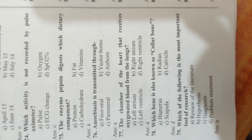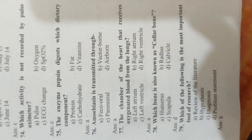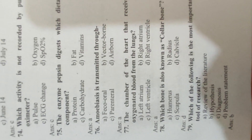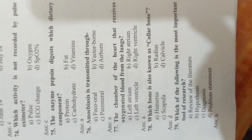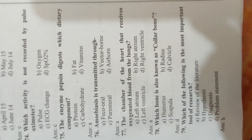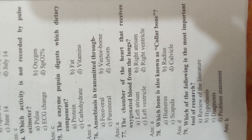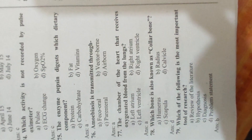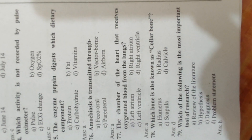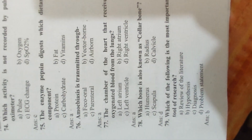Question 77: The chamber of the heart that receives oxygenated blood from the lungs is Answer A, left atrium. Question 78: Which bone is also known as the heel bone? Answer D, calcaneus. Question 79: Which of the following is the most important tool of research? Answer B, hypothesis.